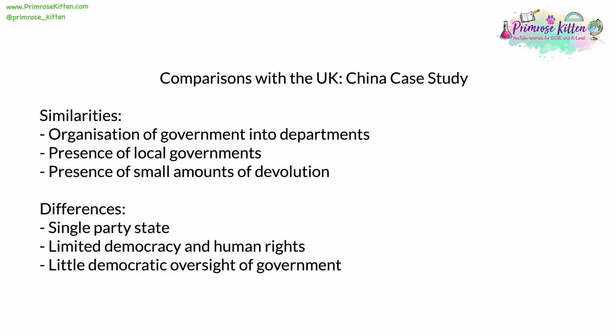China is another useful case study in comparison with the UK. There are some, although few, similarities. Their government is organised into departments, as is the case in the UK. There is the presence of local government, and there is the presence of devolution — for example, to Hong Kong. Whereas devolution in the UK is widespread and an accepted factor in politics, devolution in China is controversial and limited to specific areas. Devolution, as we have seen recently in Hong Kong, is very much under threat in China.